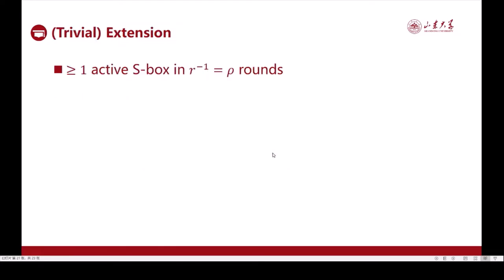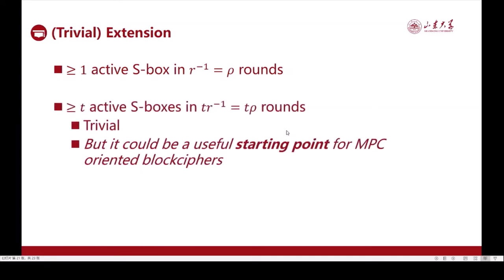Finally, we'd like to mention a trivial extension of our final result. Our linear transformations ensure at least one active S-box in rho minus 1 rounds. By composing this result, it ensures at least T active S-boxes in every T times rho minus 1 rounds. While the result is trivial, it seems a useful starting point for MPC-oriented block ciphers. One could begin with an instantiation of our construction and then seek for more fine-grained security analysis and refinements. This may give rise to elegant and secure PSPN ciphers.